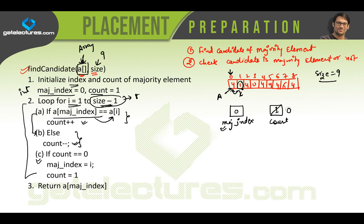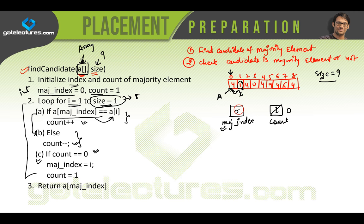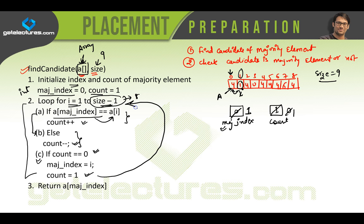After the count-- operation, we check: if count equals 0, then set maj_index = i and reset count = 1. Since count is now 0, maj_index is updated to 1 (pointing to index 1), and count is reset to 1. Then we go back to the loop.